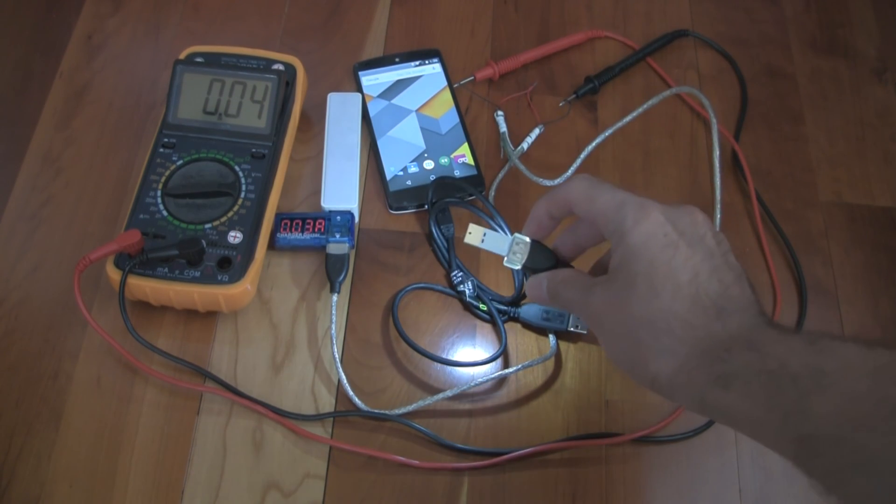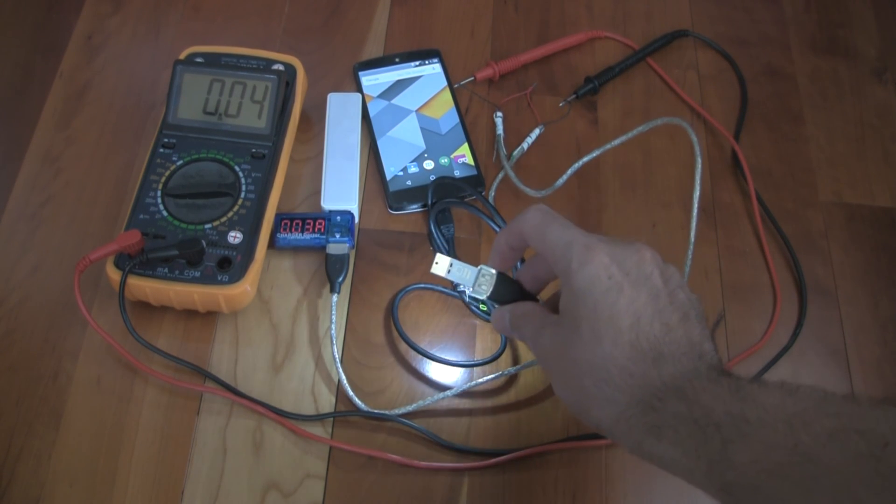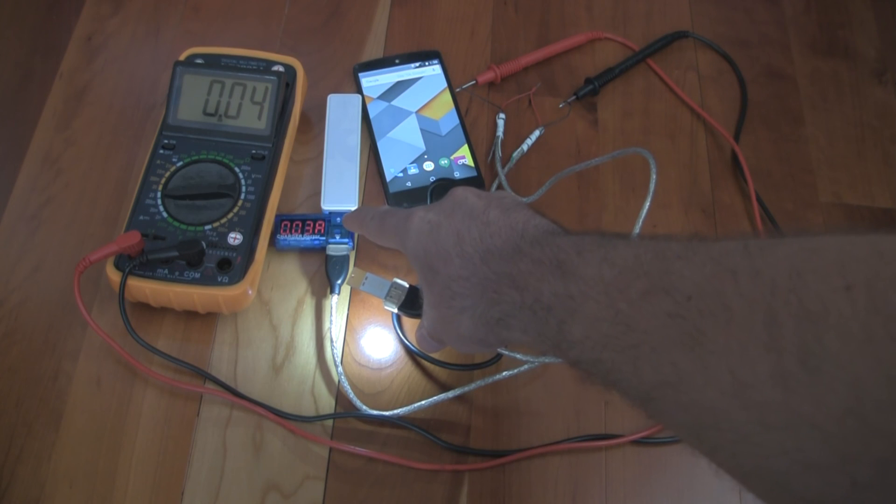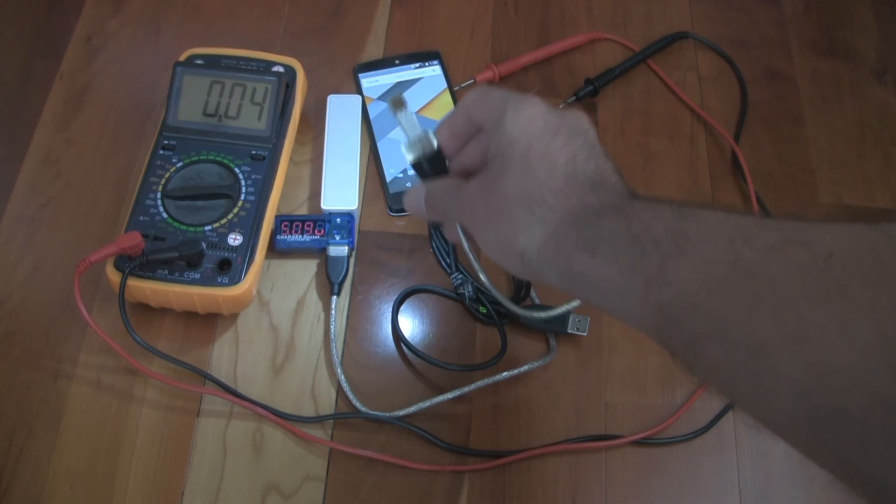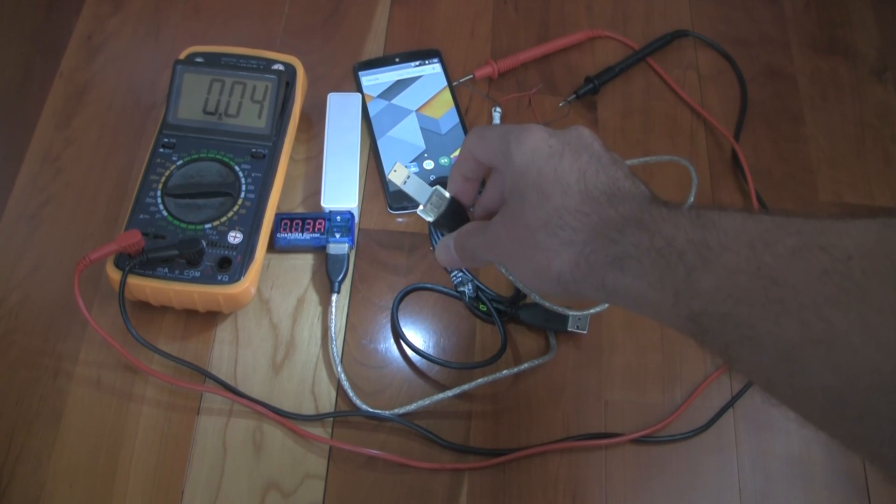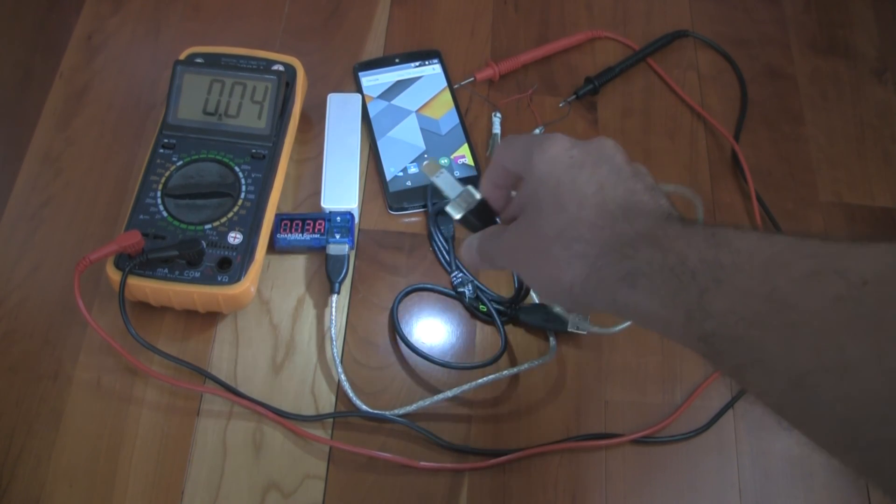Alright, so I'm going to turn this away. You can see the flashlight's on. The Charger Doctor is reading 0.03 amps and the multimeter is reading 0.04, but it bounces around 0.03 as well. Just a little bit of a difference and it could be the multimeter.